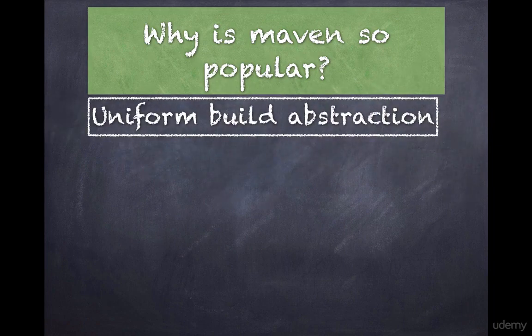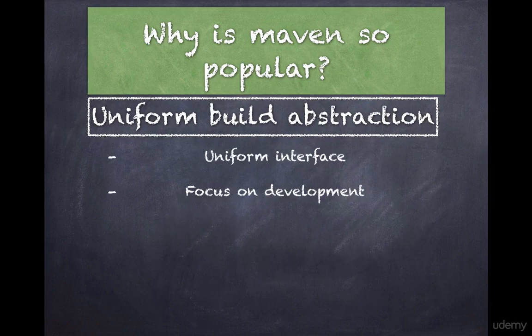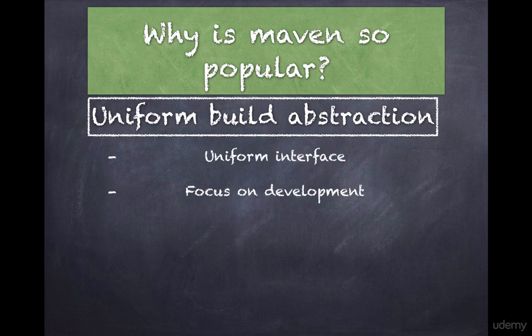Another feature that makes Maven popular is uniform build abstraction. Maven provides a uniform interface for building projects — you can build a Maven project using just a handful of commands. Once familiar with Maven's build process, you can easily figure out how to build other Maven projects, freeing developers from having to learn build idiosyncrasies so they can focus more on development.